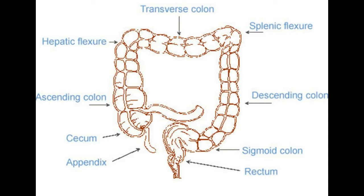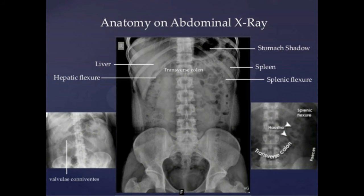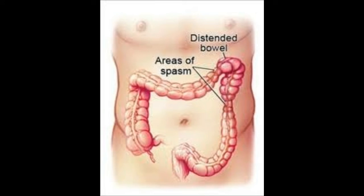Another possible problem with the splenic flexure is distension, which occurs when regular movement of the colon is impeded in some way. Possible causes of distension are infection, such as tuberculosis or amoebiosis, inflammation from ulcerative colitis or Crohn's disease, twisting of the colon or obstruction, which could be a result of cancer. Diagnosis usually requires some form of abdominal x-ray or medical resonance imaging.